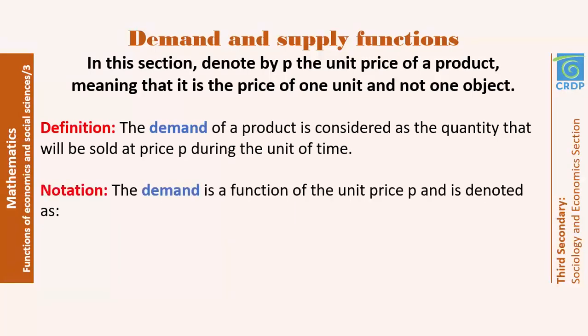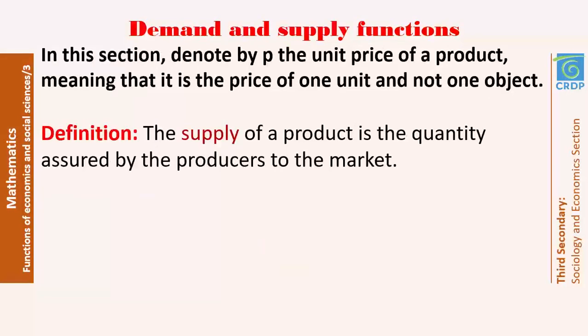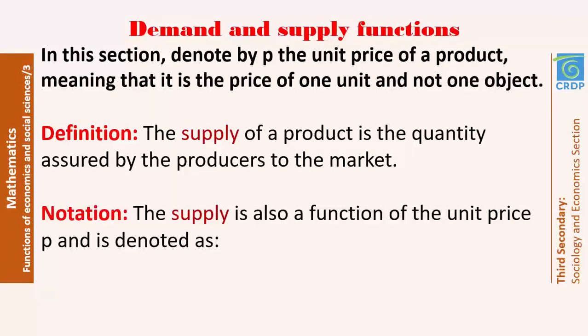The demand is a function of the unit price and it is denoted by D of P. The supply of a product is the quantity assured by the producers to the market — it is the quantity distributed to the market. It is also a function of the unit price and it is denoted as S of P.